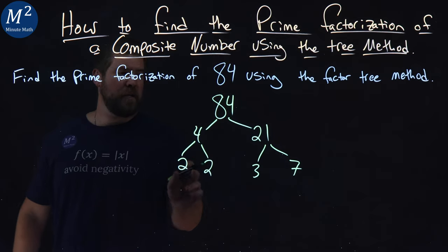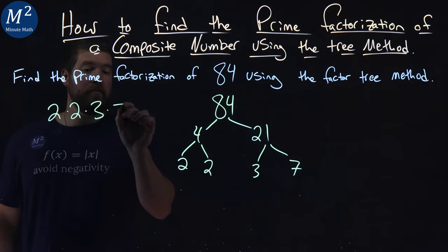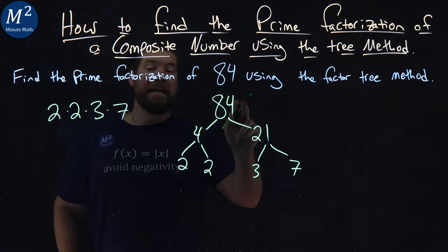So, the prime factorization, we take all these numbers, 2 times 2 times 3 times 7. Can't break them down anymore. They multiply to be 84.